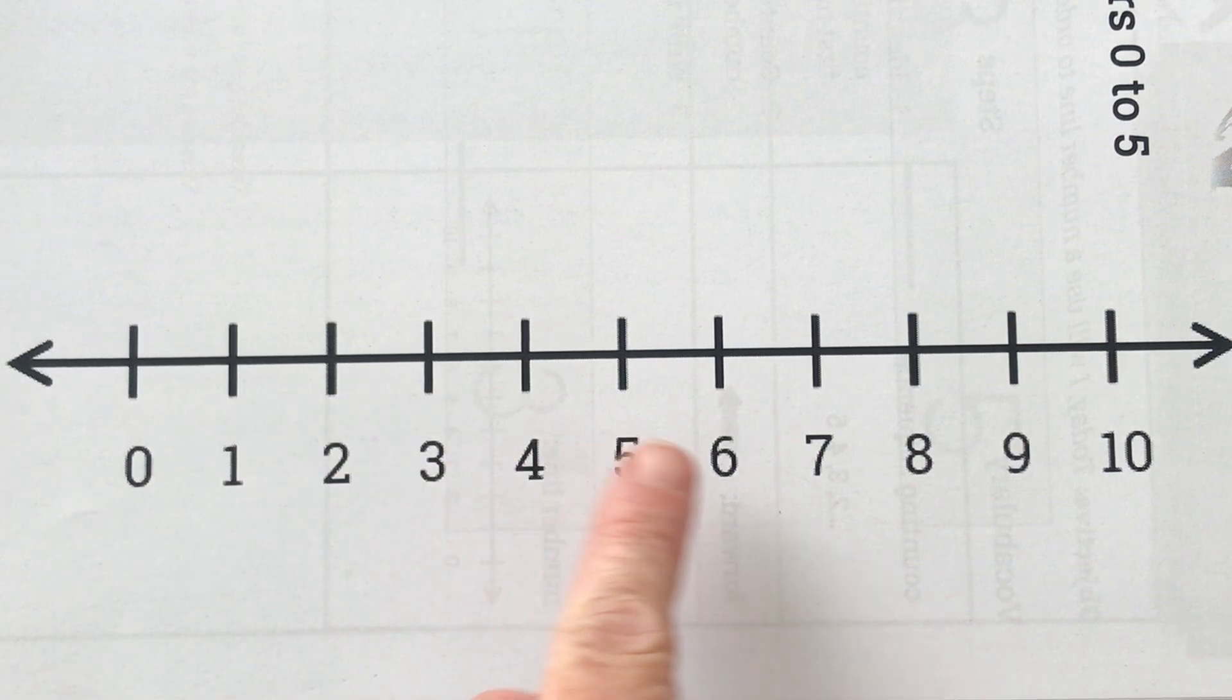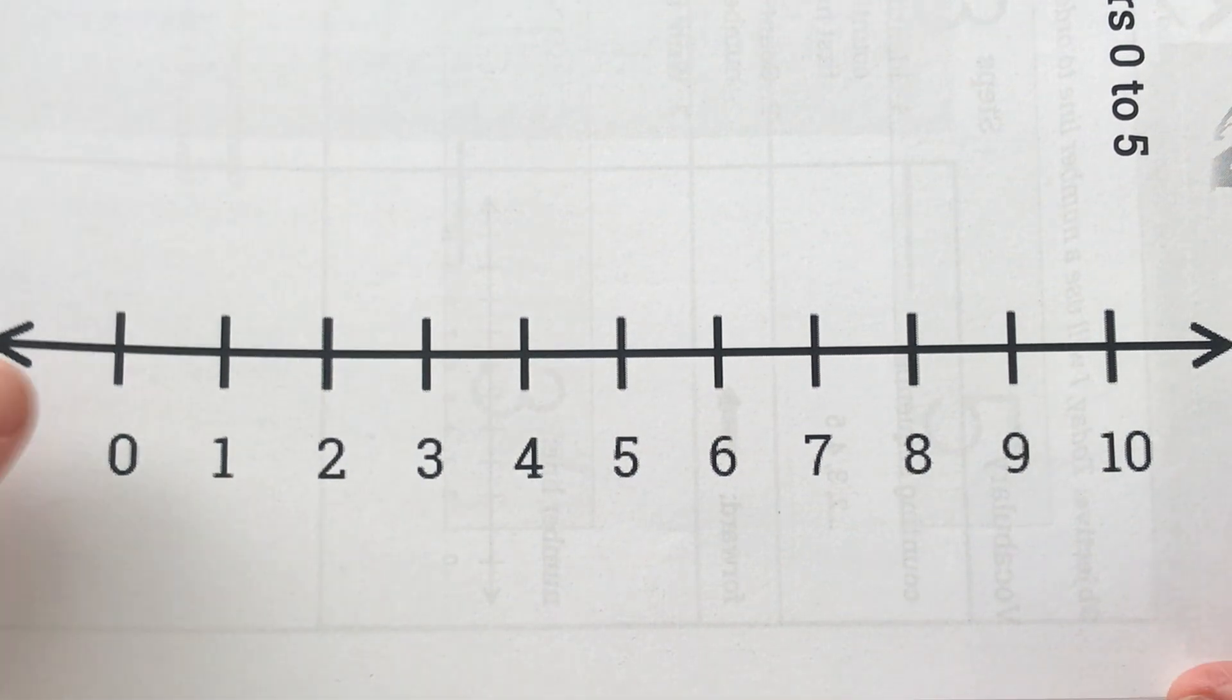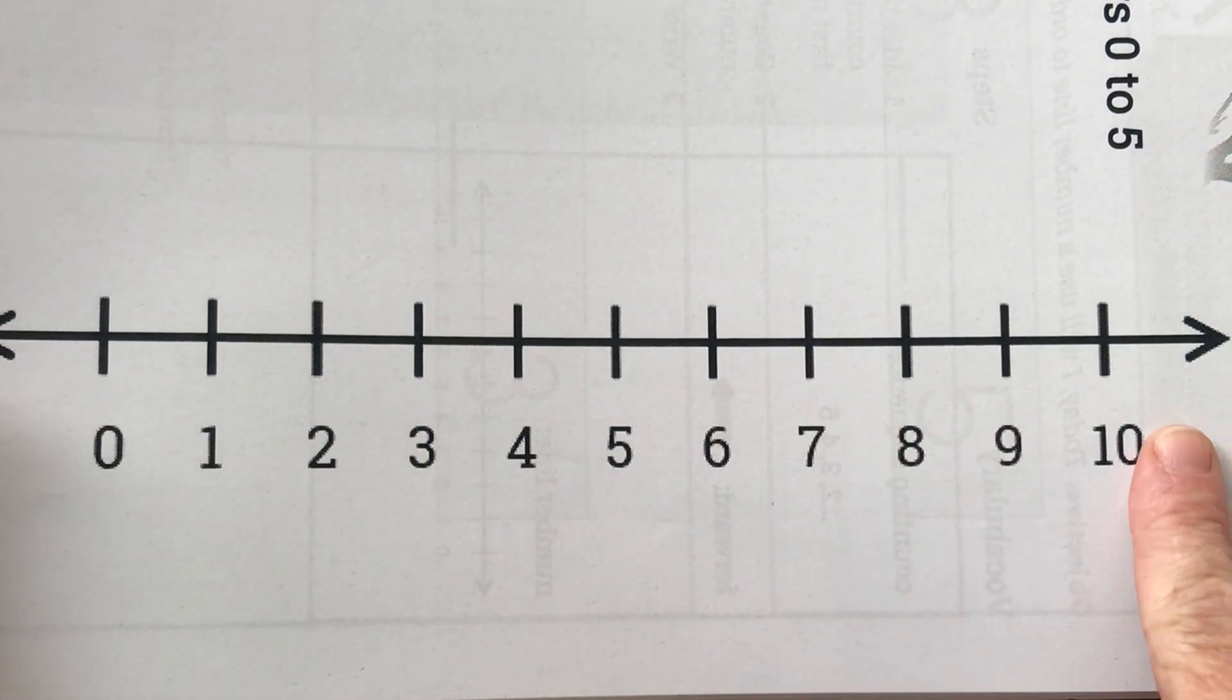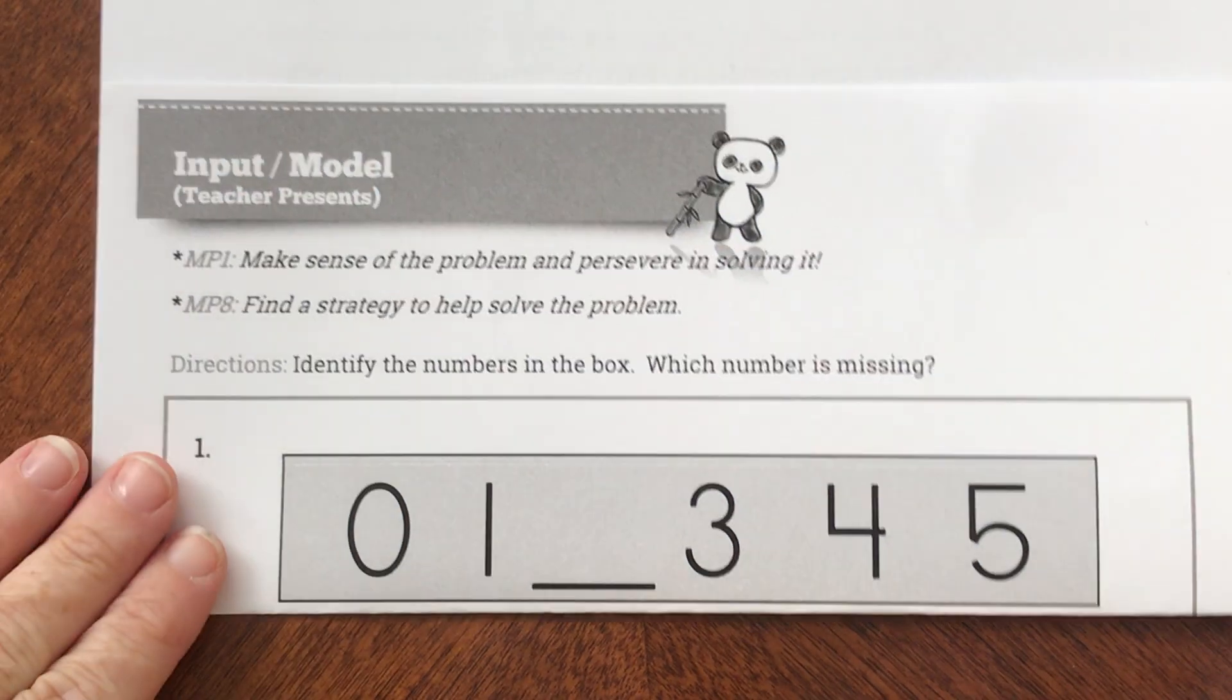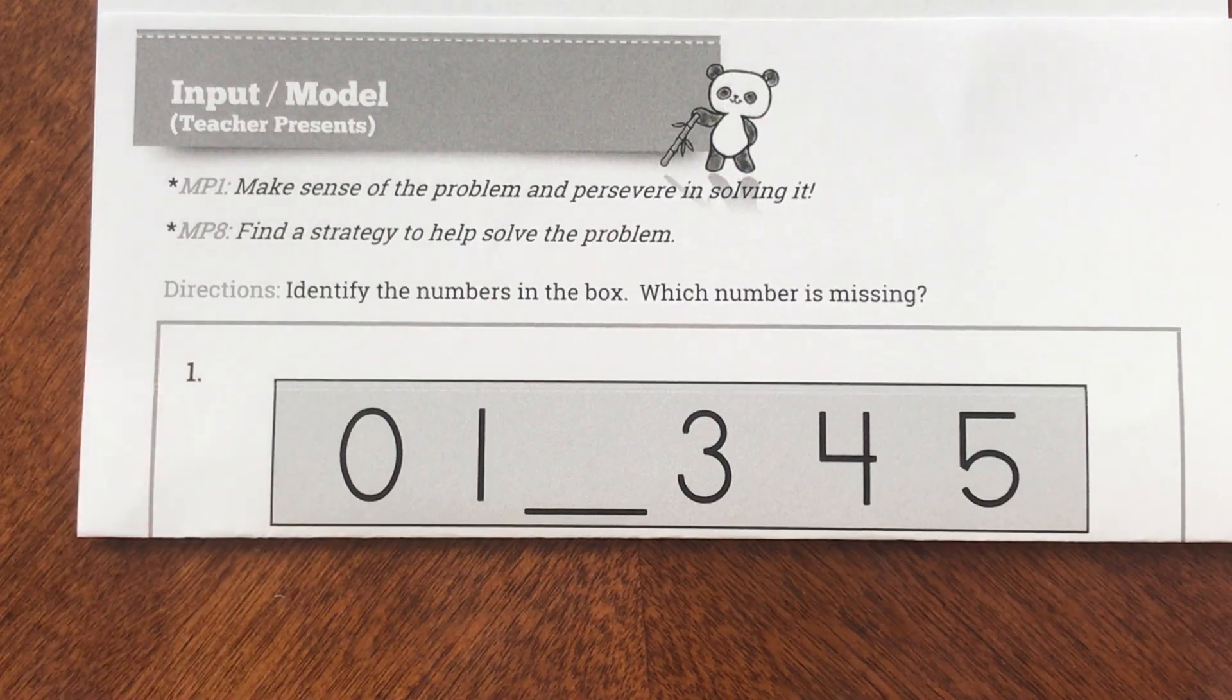Okay boys and girls, I'm going to show you what we're going to be doing today. Our goal today is to use the number line to help me if I need it to order numbers from zero to five. Here is my first problem.